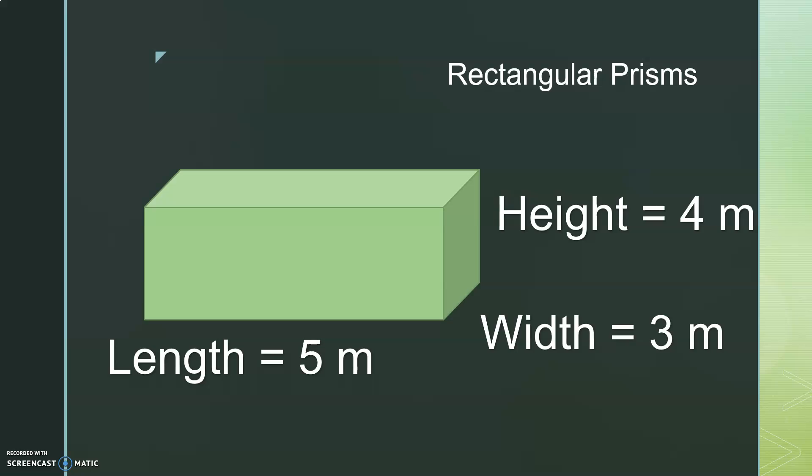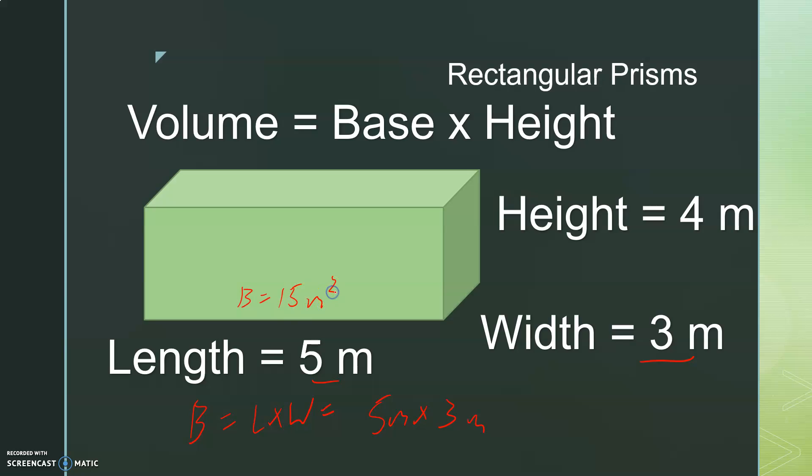We're going to talk about just the triangular prisms today. But just to review rectangular prisms to make sure we're talking about it right, we could use a formula, volume equals base times height, to find the base here. That was length times width, which is 5 meters times 3 meters. And so the base is 15 square meters. Then we multiply it by the height, which is 4. So volume equals base times height, 15 times 4, which should give us 60 cubic meters. Again, volume is always in cubic meters.